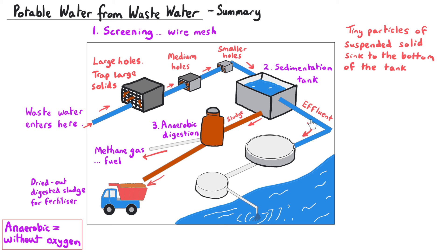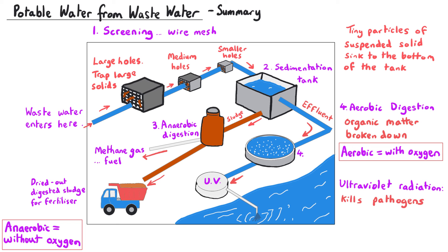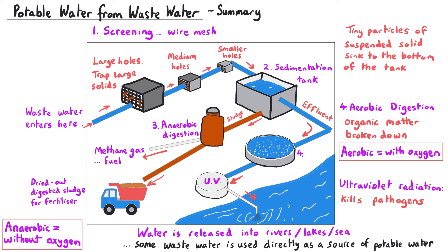Meanwhile, the effluent is removed from the sedimentation tank and moved to a chamber exposed to air, containing bacteria that break down organic matter by aerobic digestion — digestion with oxygen. Oxygen is bubbled through this chamber. The treated effluent then moves to another chamber where it may be treated with UV radiation to kill any remaining pathogens. Finally, the wastewater is deemed safe to be released and pumped out into the water system — most commonly into rivers, lakes, or seas.